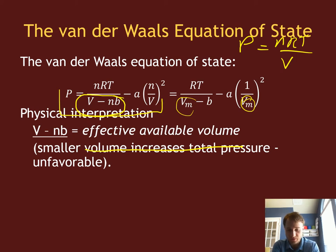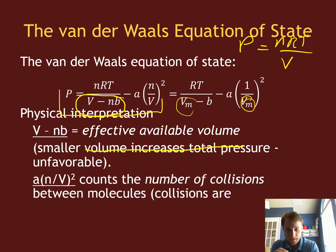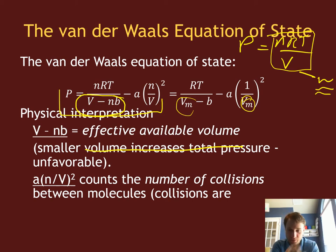The van der Waals equation of state has this effective volume term, and then this extra term: a times N over the volume squared. This is subtracted from the pressure. You have the NRT over V term from the ideal gas, and you're subtracting off some extra term. That subtracted extra term reduces the overall effective pressure, and it is related to collisions of the molecules and intermolecular interactions and favorable attractions between the molecules.